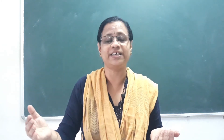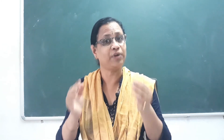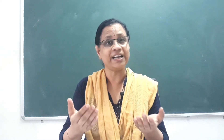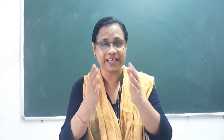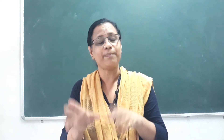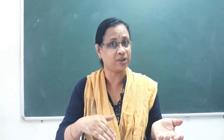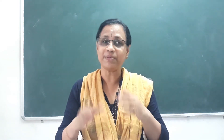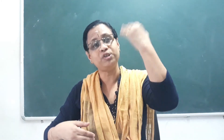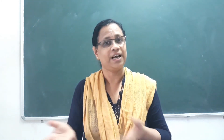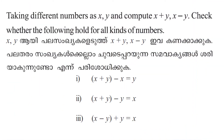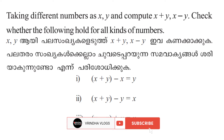If we call it positive 5, we call it positive 5. That's why we call it an application. If a number is negative, we call it going down. We call it negative. That's why we call it an application. Taking different numbers as x and y, compute x plus y and x minus y, and check whether the following hold for all kinds of numbers.